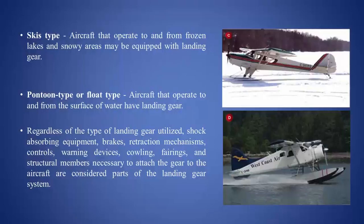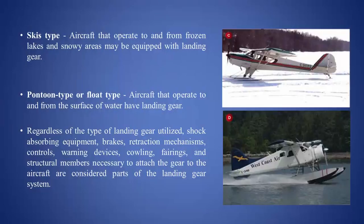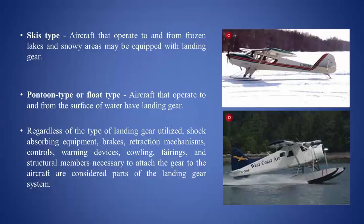The next type of landing gear is the ski type. In the first figure, this aircraft is positioned on snow. Aircraft that operate to and from frozen lakes and snowy areas may be equipped with skis in place of wheels. Next is the pontoon or float type. Aircraft that operate to and from the surface of water have this type of landing gear — we call them amphibian aircraft. These aircraft operate over water surface, taking off and landing from the surface of water, so they have float-type landing gear and no wheels.